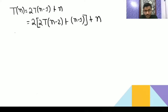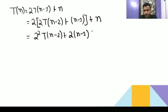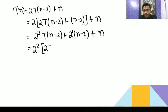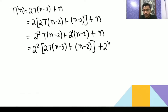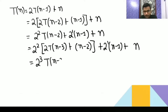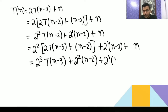So we get 2² · T(n-2), then 2·(n-1) plus n. Here the power is 1. Now in place of T(n-2) we again write 2T(n-3) + (n-2), giving us 2³ · T(n-3), then 2² · (n-2), then 2¹ · (n-1).